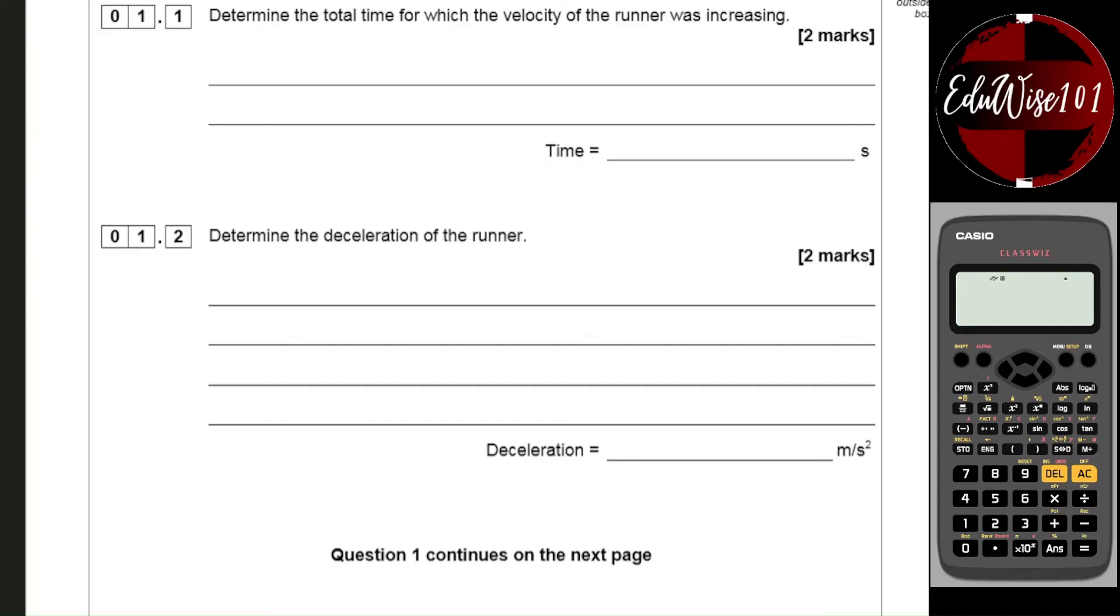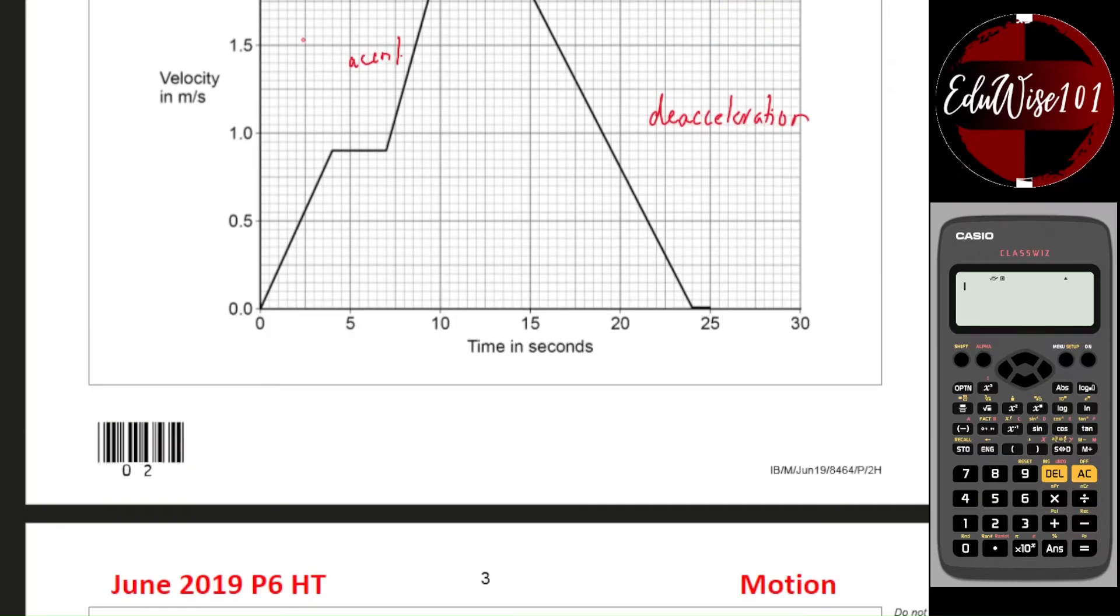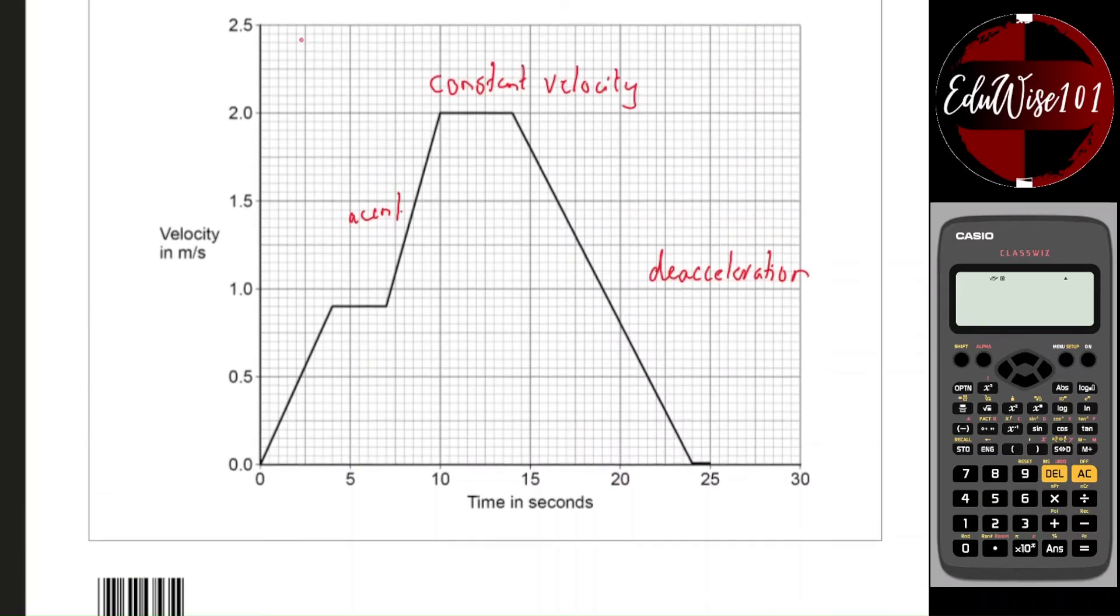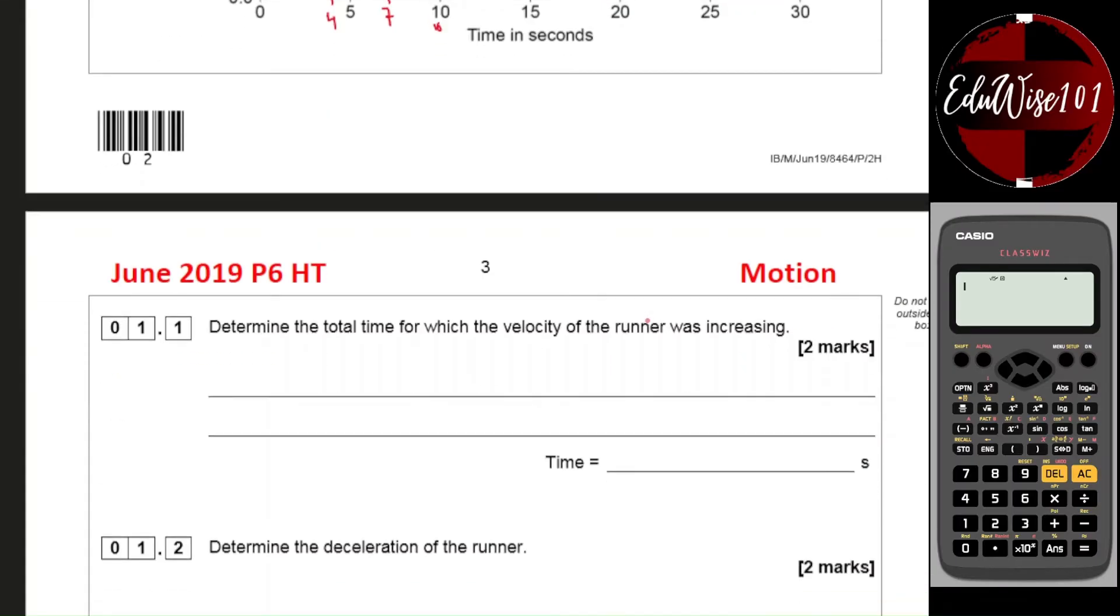So let's have a look at the first question. Determine the total time for which the velocity of the runner was increasing. So the velocity of the runner was increasing between two points: from zero to four seconds, and then from seven seconds to ten. So four plus three should give me seven seconds.